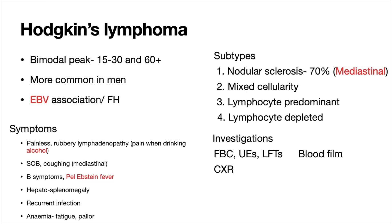A chest X-ray is useful to investigate mediastinal lymphadenopathy and rule out differentials such as TB or sarcoidosis. A biopsy is critical because Hodgkin's lymphoma has a characteristic cell seen under the microscope — the Reed-Sternberg cell. If these are present, it confirms the diagnosis of Hodgkin's lymphoma. A bone marrow biopsy can also be performed to assess marrow involvement.